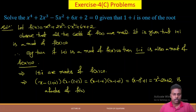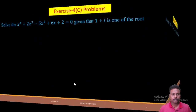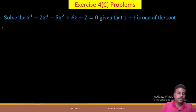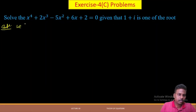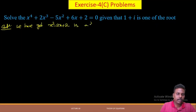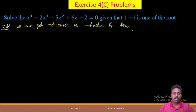This implies (x−(1+i)) and (x−(1−i)) are factors. Their product is (x−1−i)(x−1+i) = (x−1)² + 1 = x²−2x+2, which is a factor of f(x). We use Horner's synthetic division to find the other factor.